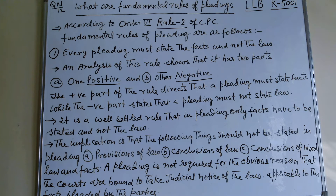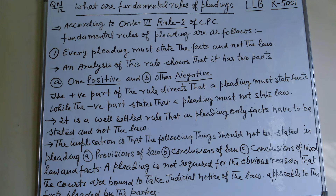There are 4 fundamental rules of pleading. First fundamental rule: every pleading must state the facts and not the law. An analysis of this rule shows that it has two parts. The first fundamental rule of pleading contains two parts — one is positive and the second is negative. The positive part directs that pleading must state facts, while the negative part states that a pleading must not state law. It is a well settled rule that in pleading only facts have to be stated and not the law.